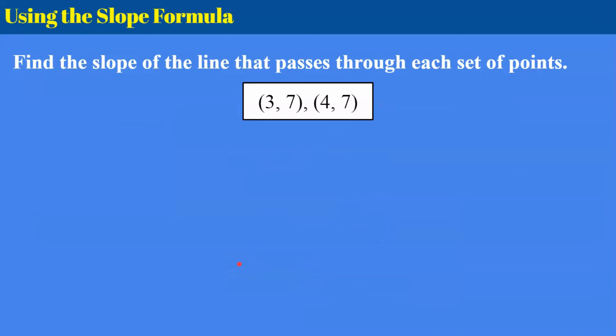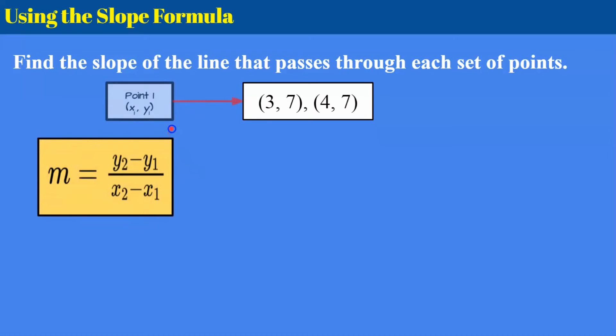All right here's another one. Again you can pause and try it on your own or you can stay with me. So I'm going to write down my slope formula so I'm ready to go. Identify point 1. Identify point 2. I'm ready to substitute in. The y value of point 2 subtract the y value of point 1. The x coordinate of point 2 subtract the x coordinate of point 1. So again this is the second ordered pair (4, 7), the first ordered pair (3, 7).